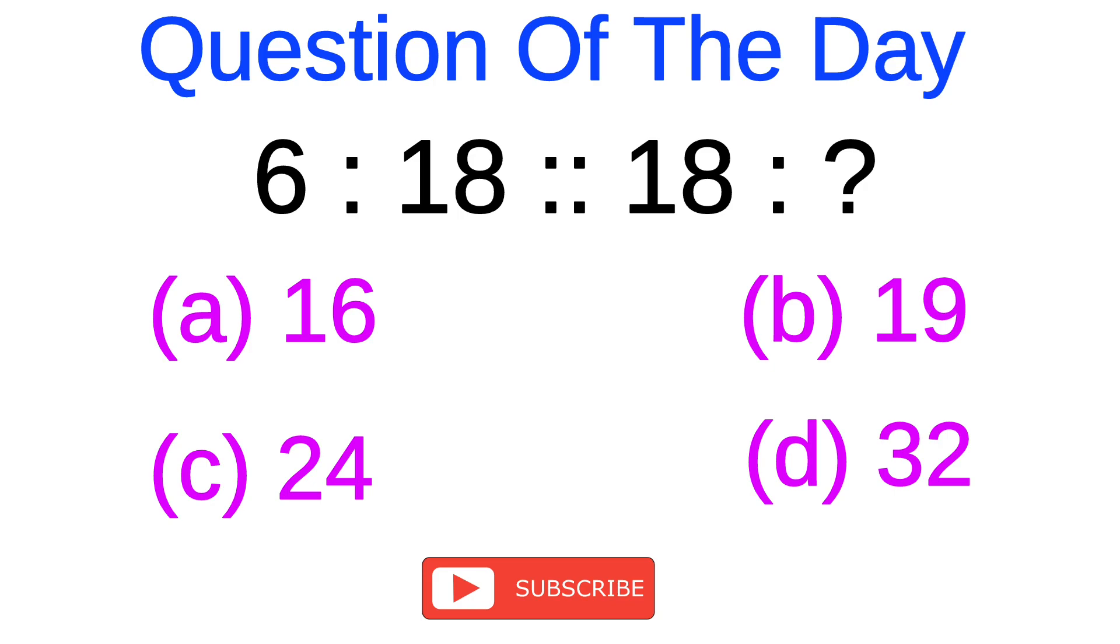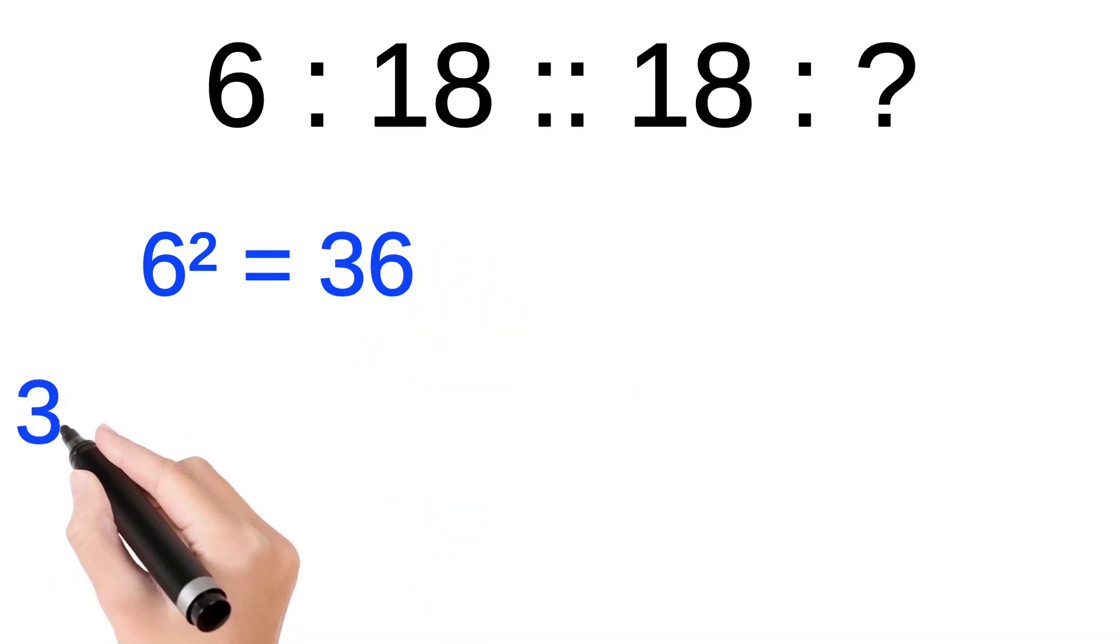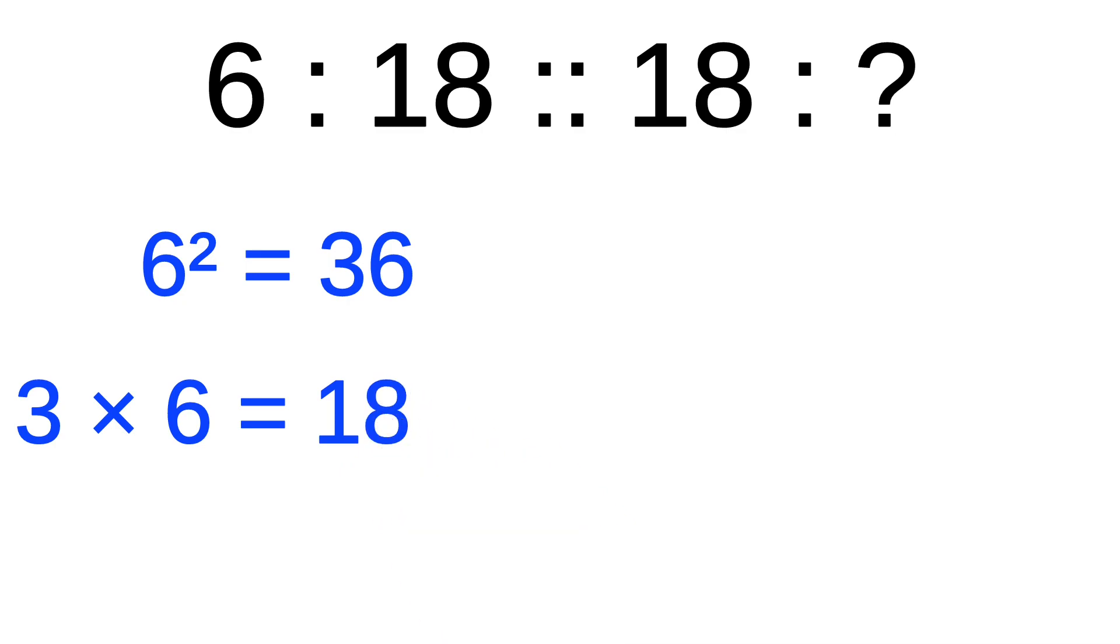If we do the square of the first number, that is 6 squared equals 36, and then multiply both the digits, that is 3 into 6, we get the second number, that is 18.